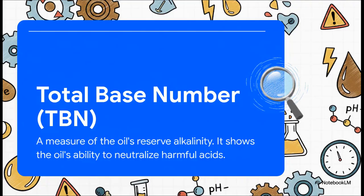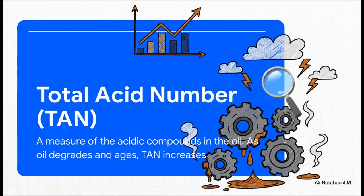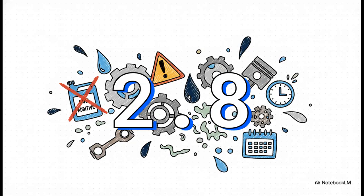First, let's talk about TBN, or total base number. The easiest way to think about this is as the oil's defensive shield. It's a package of additives that are there for one reason: to neutralize all the nasty, corrosive acids that naturally build up inside an engine from combustion. And on the other side of the battle, you have TAN, or total acid number. This measures the strength of the enemy attack, all those harmful acids that are trying to eat away at your engine. As your oil gets older, its TBN shield gets weaker and the TAN acid attack gets stronger, and you never, ever want the acid to break through the shield.